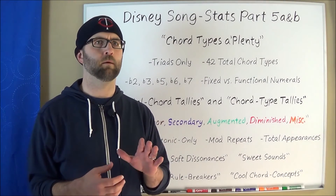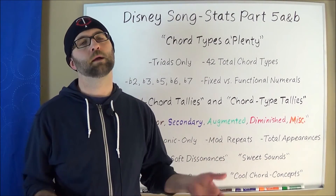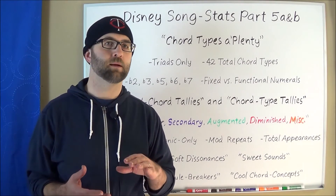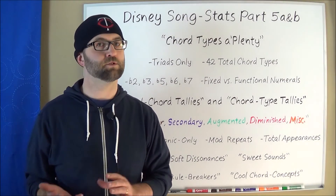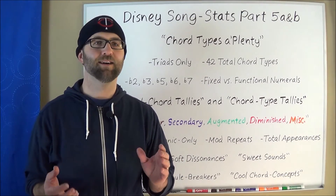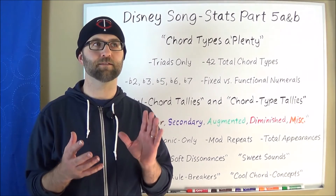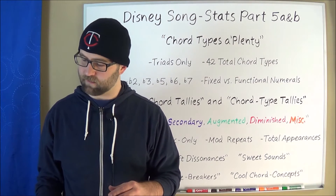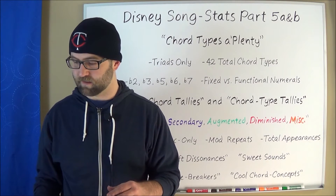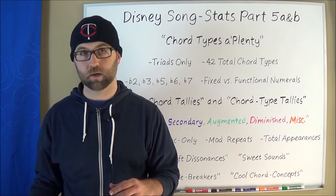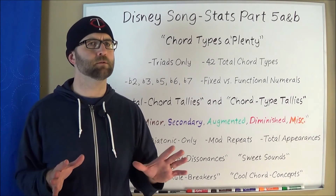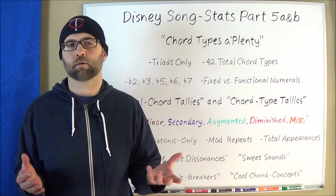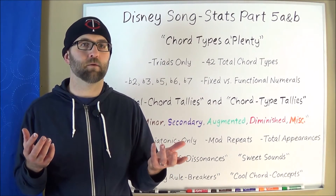Why only four augmented triad types when the rest have twelve? Without going into too much detail: any augmented triad you play is going to have the same notes as any of the other two augmented triads with the same notes — they'll just be different inversions of each other. A C augmented has the same notes as an E augmented, which has the same notes as a G-sharp augmented. Augmented chords just aren't used that much, and I didn't want them to take up too much space in the graph.